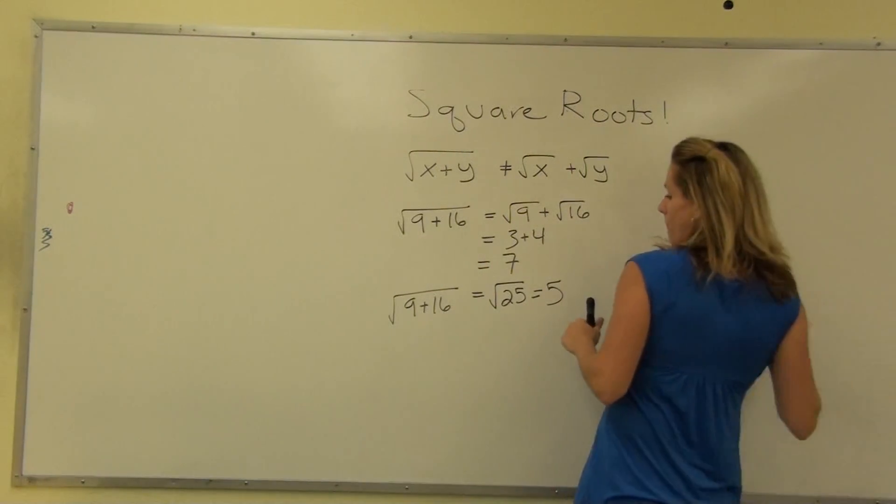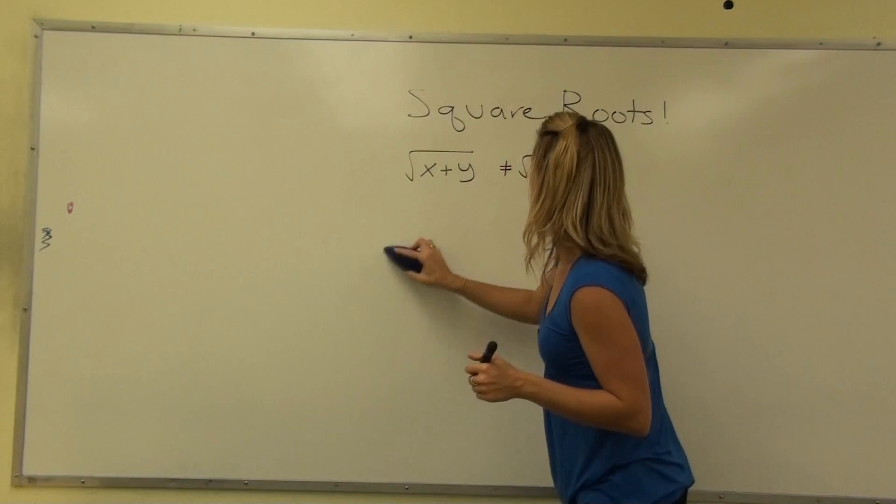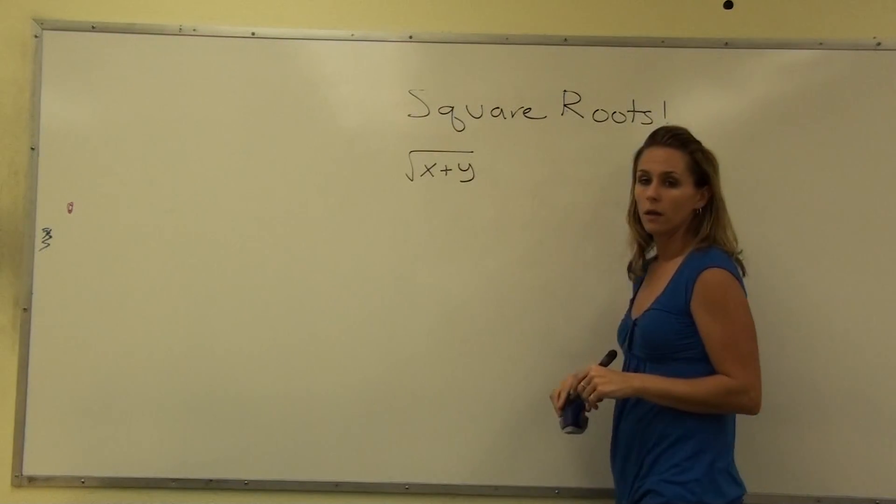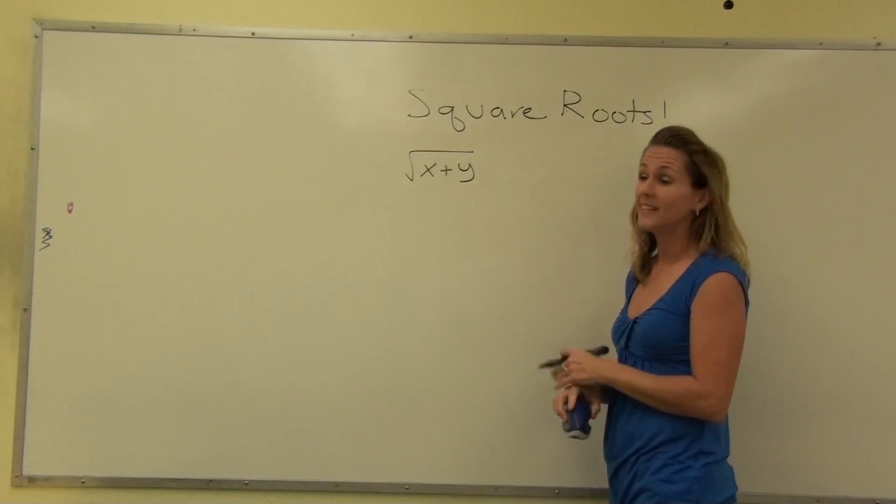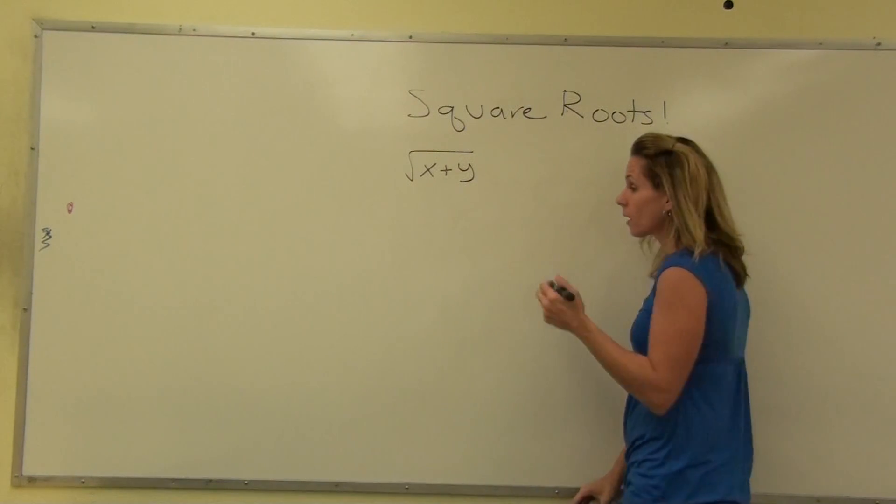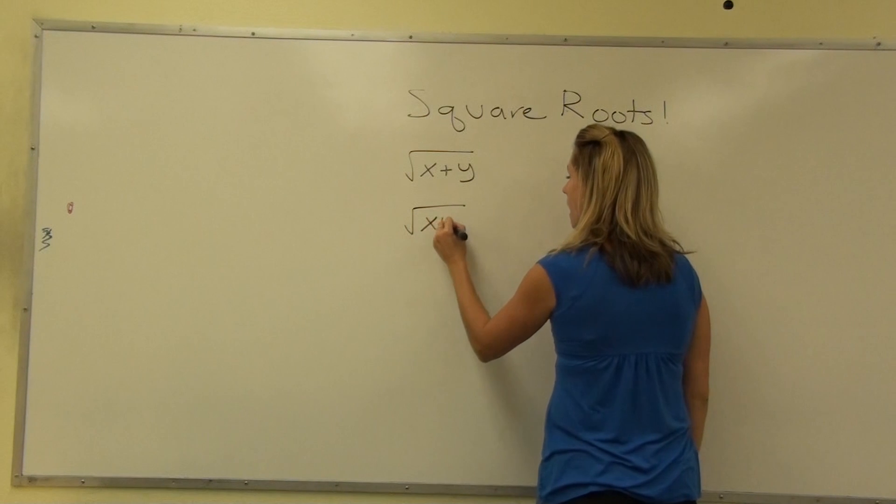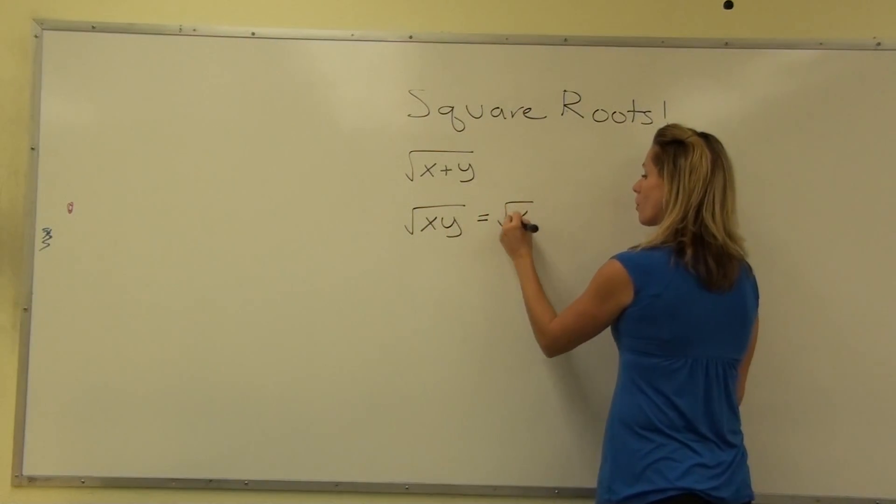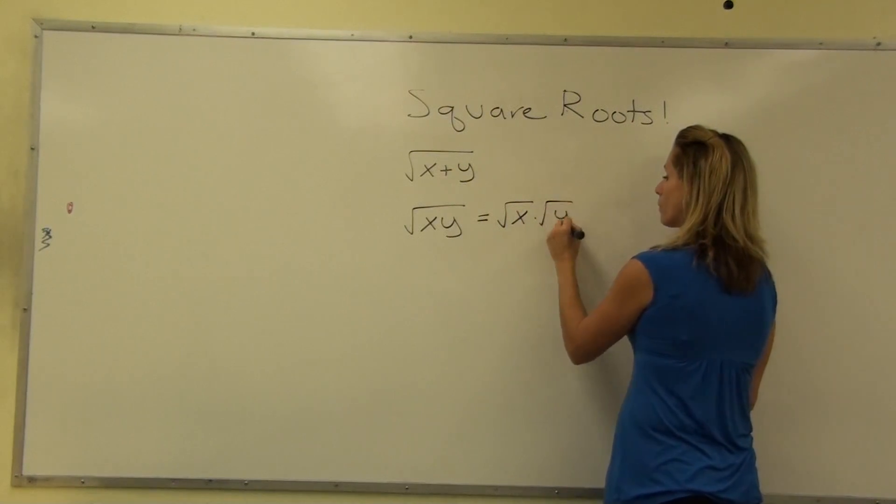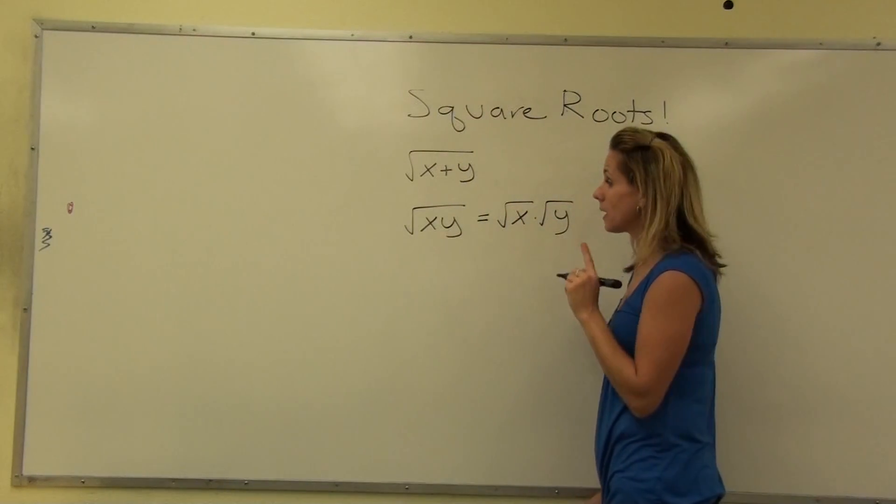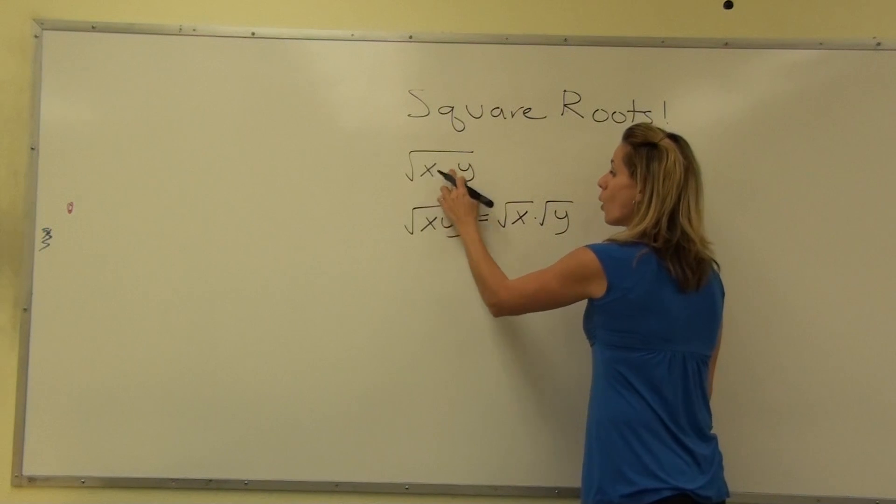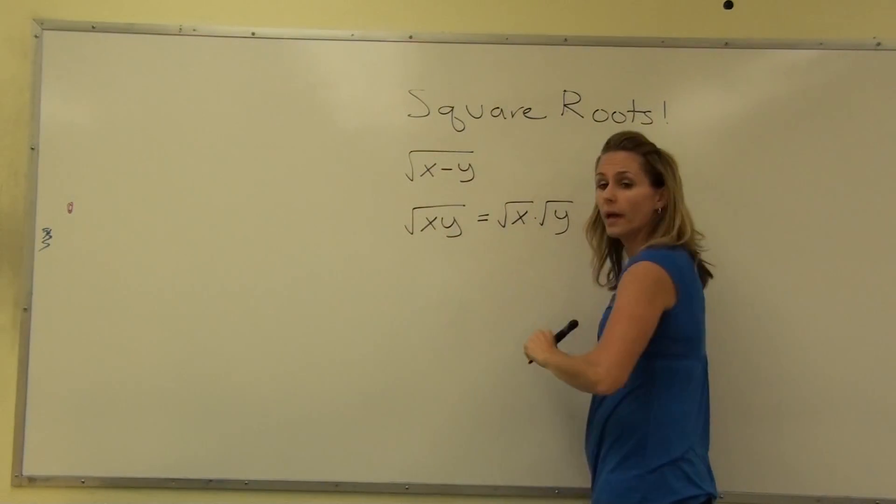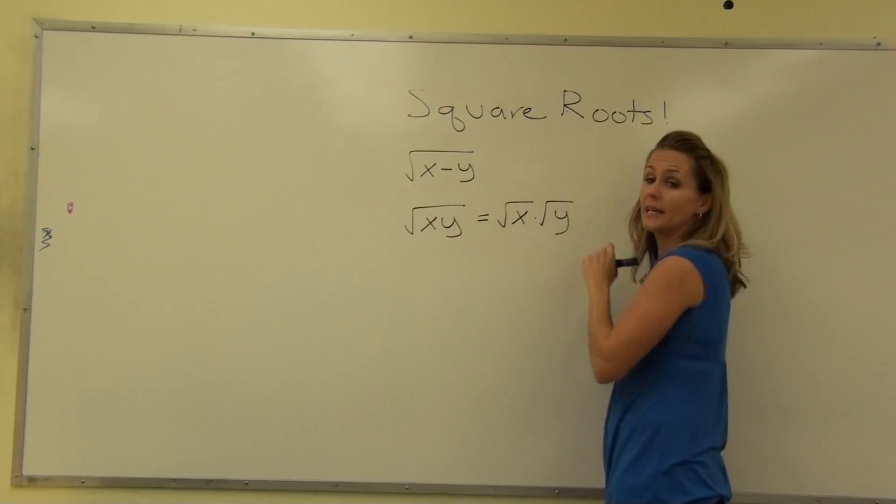If you end up with a problem like this, there's nothing you can do with it. You can't split that up. You can, however, given x times y, split that up into the square root of x times the square root of y. But there's a big difference, and that's what you want to remember. If you have a plus or even a minus, this does not split. But if you're multiplying them together, you can split into each piece.